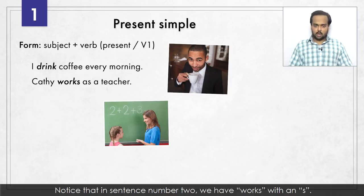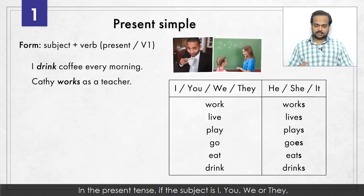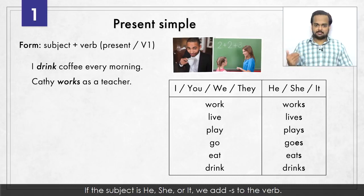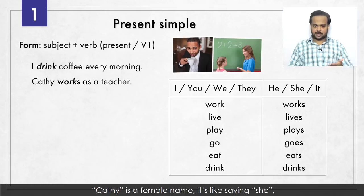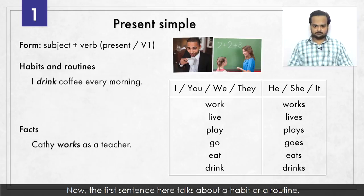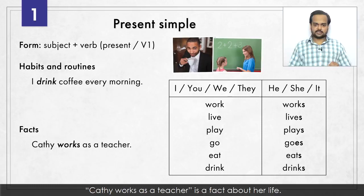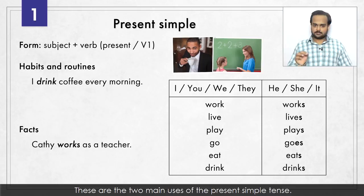Notice that in sentence number two, we have 'works' with an S. In the present tense, if the subject is I, you, we, or they, we use a verb without S – that's why 'I drink.' If the subject is he, she, or it, we add S to the verb. Kathy is a female name – it's like saying 'she' – so we've said 'Kathy works.' The first sentence talks about a habit or routine – something that I do regularly. The second sentence is a fact – Kathy works as a teacher is a fact about her life. These are the two main uses of the present simple tense.